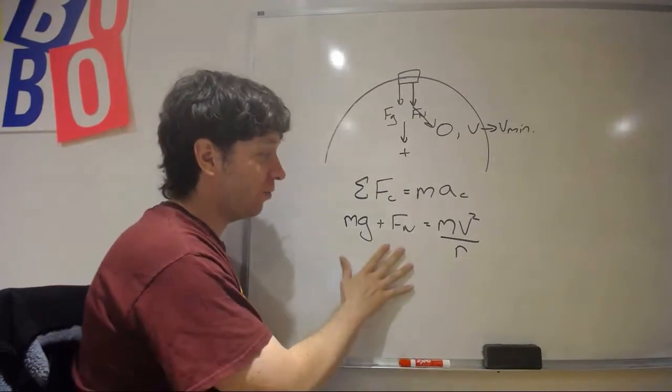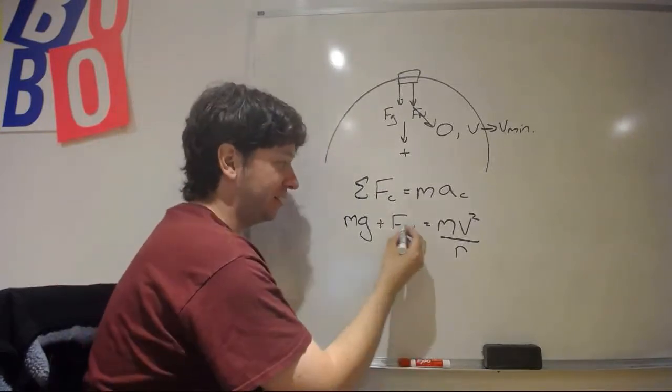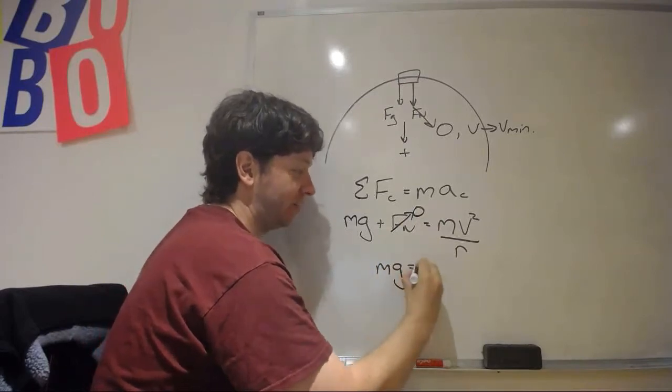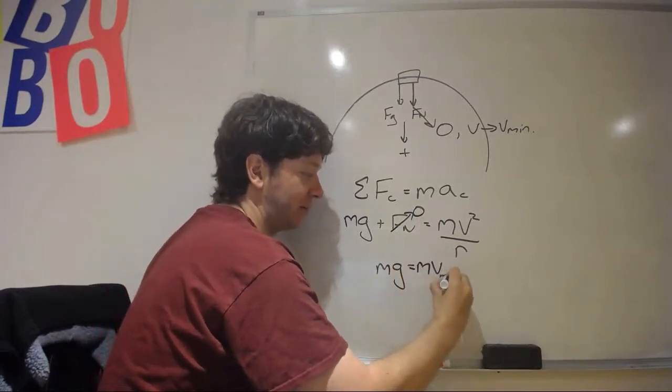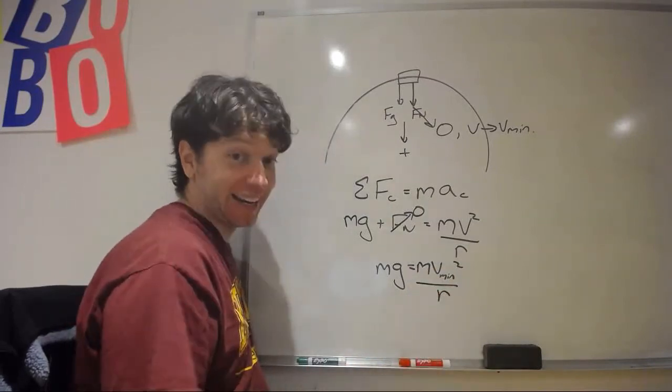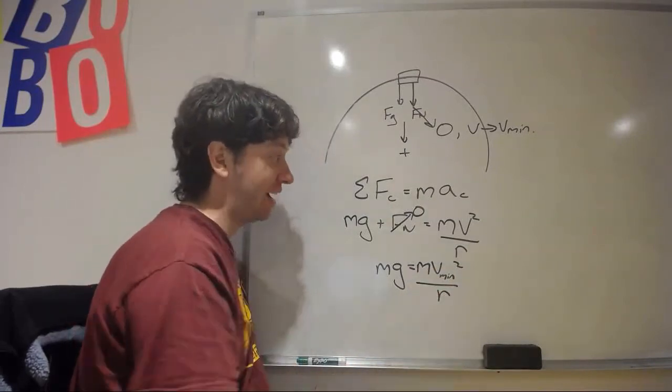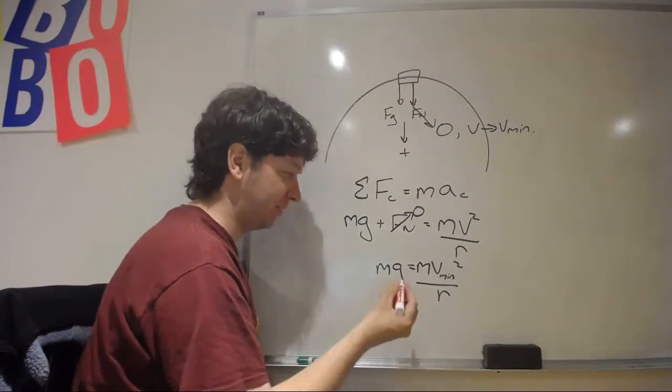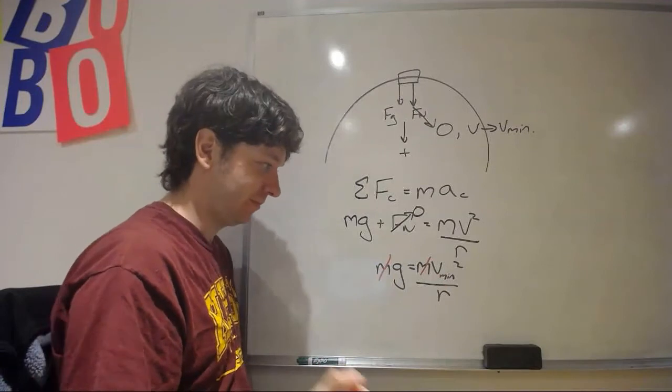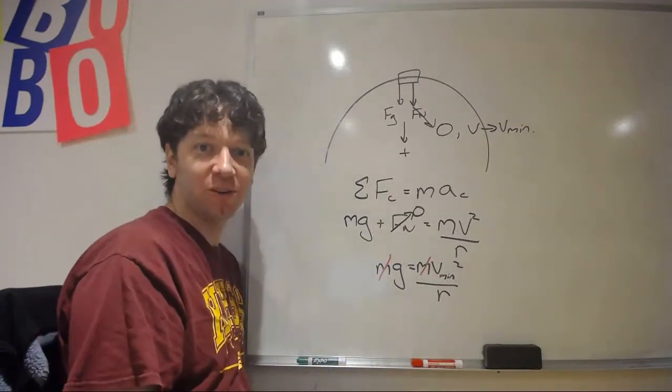So, in this equation, what we can do is we can set normal force equal to zero and say mg equals mv minimum squared over r. And, again, the cool thing is that mass cancels. And, that's very, very important.